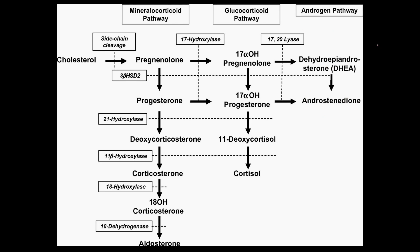So remember GFR: zona glomerulosa, zona fasciculata, and zona reticularis. Another way people like to remember this is: sweat, sugar, sex — the deeper you go, the sweeter it gets. Aldosterone works to increase blood pressure, so that makes you start sweating. Cortisol promotes release of glucose, so that's the sugar. And then sex for sex steroids. Very high yield to remember the different layers and what's produced there. I can also do a separate video explaining the histology of the different layers, because they will give you a picture, point to a layer, and ask what's produced here or where a certain hormone is produced.